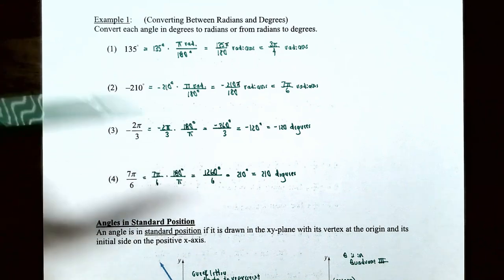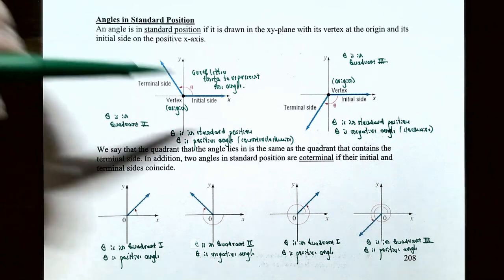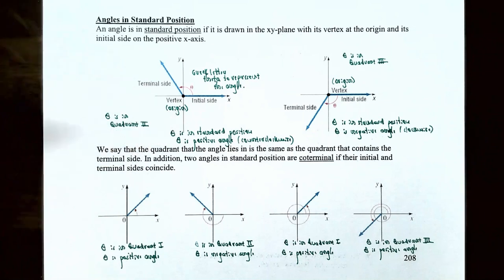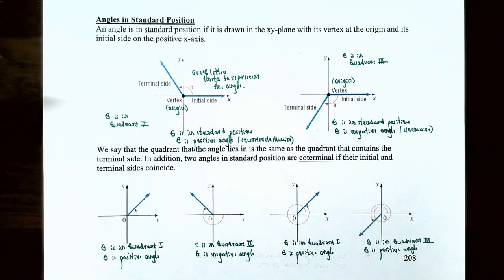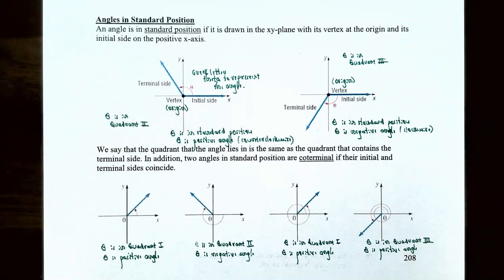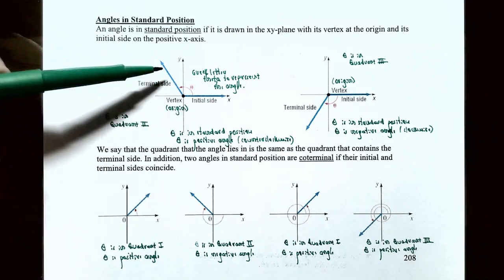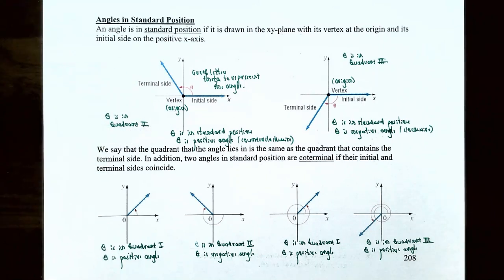Now that we know how to convert between degrees and radians, let's talk about angles in standard position. An angle in standard position is drawn in the xy plane where the vertex is the origin and its initial side is on the positive x-axis. If we rotate the initial side counterclockwise to the terminal side, the angle theta is positive, and the quadrant of the angle is determined by which quadrant contains the terminal side.